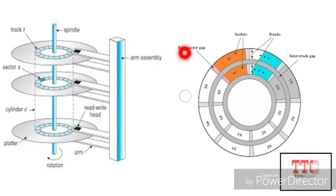The inter-sector gap is the gap between two sectors in a track and the inter-track gap is the gap between two tracks in a platter.